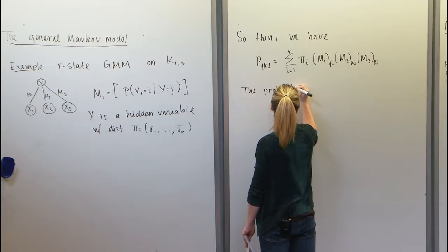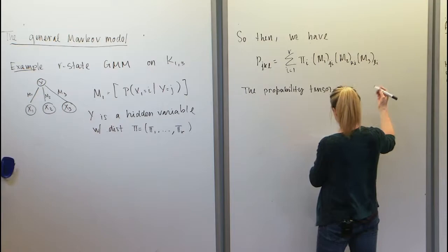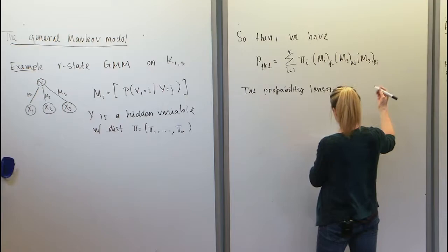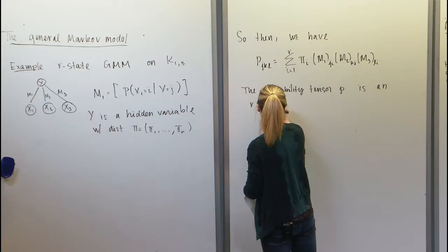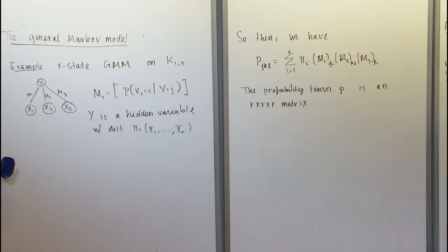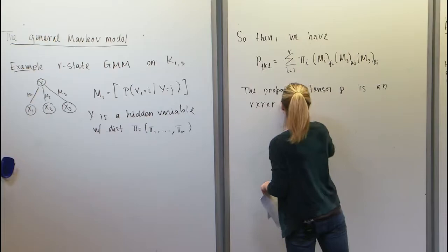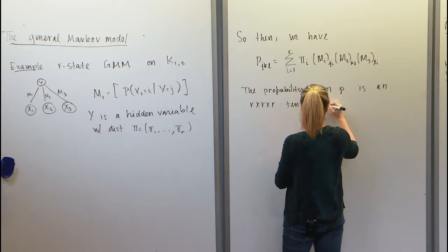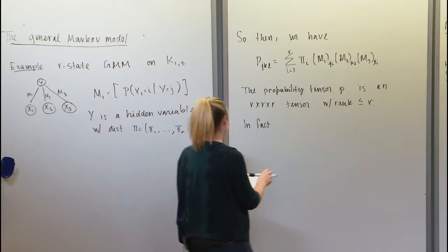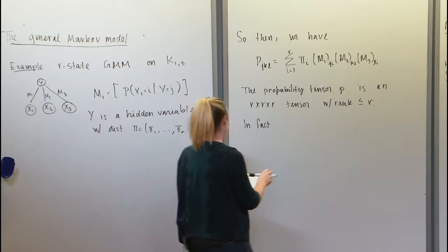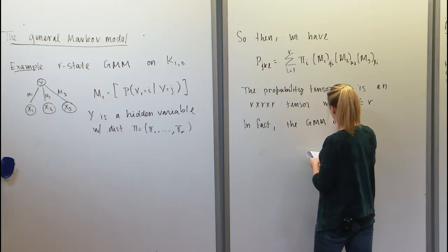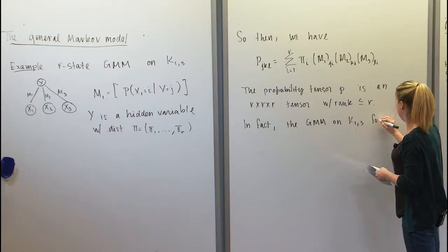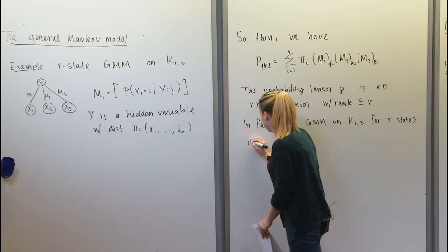The probability tensor is an r×r×r tensor with rank less than or equal to r. In fact, the general Markov model on K_{1,3} for r states is the same family of distributions as the r-th mixture model of three independent random variables, where each random variable takes one of r states.